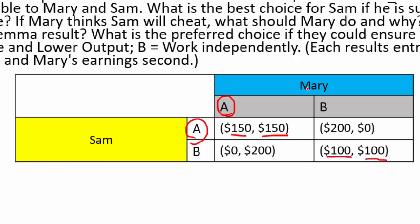In the case where one is cooperating and the other is working independently, if Mary works independently she gets $200 and Sam gets zero. So working independently is a dominant strategy for Mary — she can take the entire market. On the bottom left, Sam works independently and Mary gets shut out of the market. In most cases the safest thing for both competitors is to work independently, landing them in the bottom right corner.